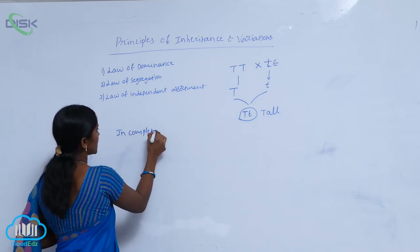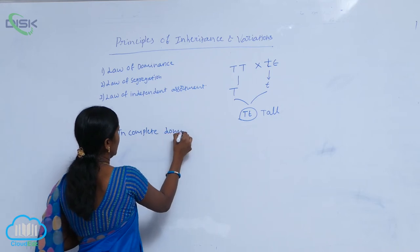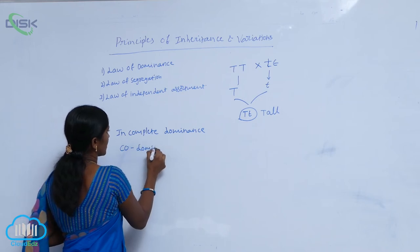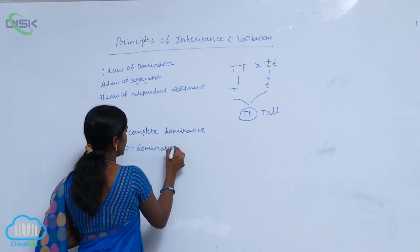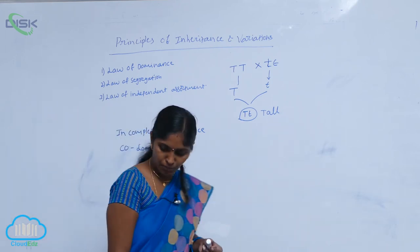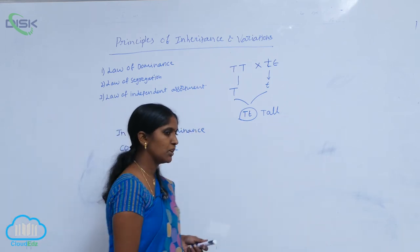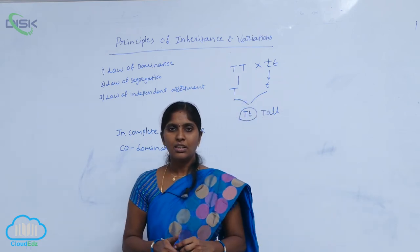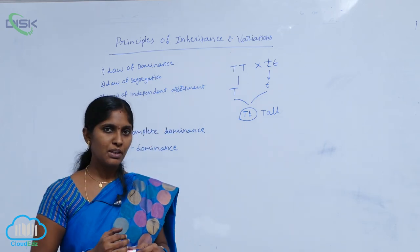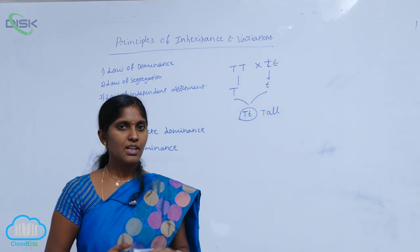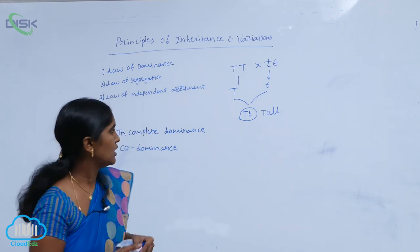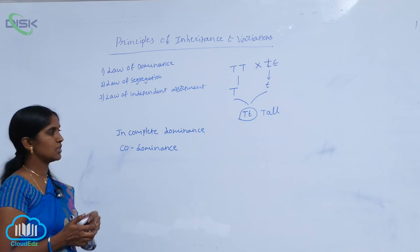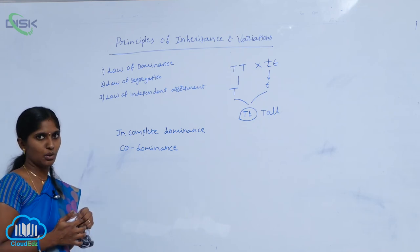Incomplete dominance and co-dominance. How are they differentiated? How do they vary from dominance? Generally, the dominance of offspring comes from the dominant character of the parent, which we call the law of dominance. But that is not universal. In some cases, there can be exceptions. Based on that, scientists formulated two more laws: incomplete dominance and co-dominance.